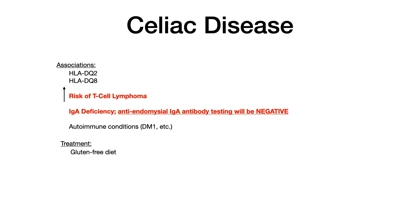Celiac is associated with HLA-DQ2 and DQ8, and as mentioned, it increases the risk of T-cell lymphoma. Important for Step 2 and Level 2: one of the diagnostic tests is an anti-endomysial IgA antibody test, which tends to be positive in patients with celiac. However, there's a strong association between celiac disease and IgA deficiency. If somebody has an IgA deficiency, their anti-endomysial antibody will be falsely negative — not because they don't have celiac, but because they lack IgA antibodies. That's a very high-yield clinical tidbit.